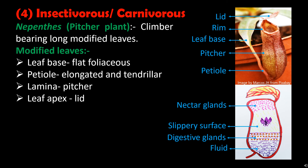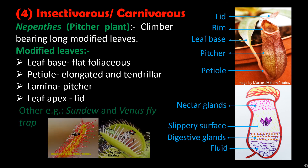Other examples of insectivorous plants are the sundew and Venus flytrap. So that was all about heterotrophic nutrition in plants.